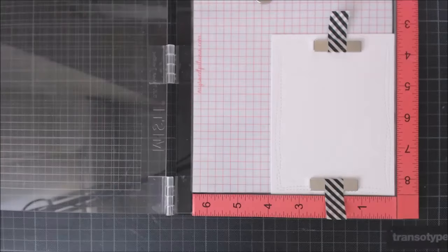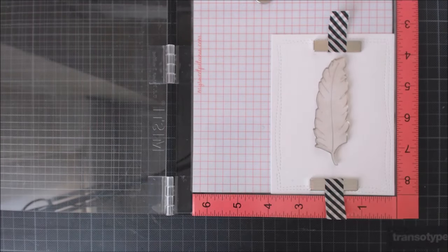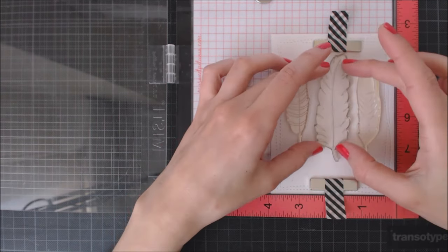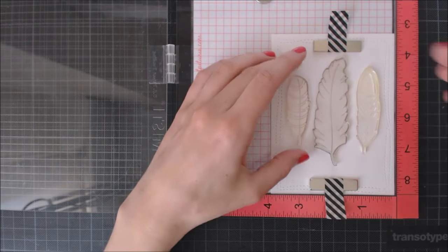So I went ahead and cut this panel using the Wonky Stitch dies from Avery Ale and for my cards today I'm going to be using the Feathermore stamps from Waffle Flower. I'm using my MISTI to do my stamping.